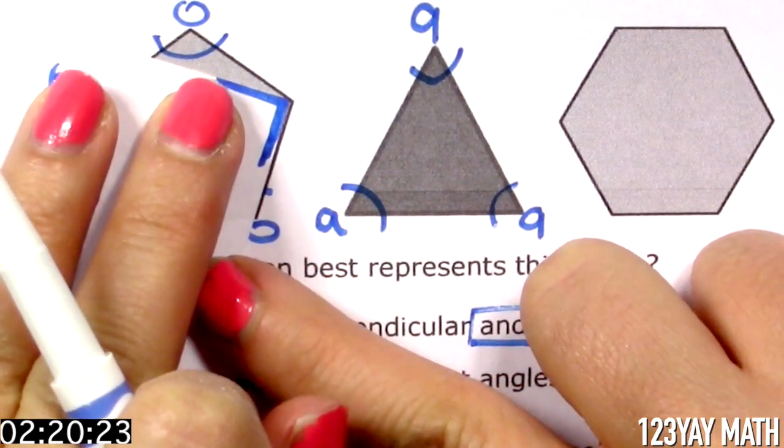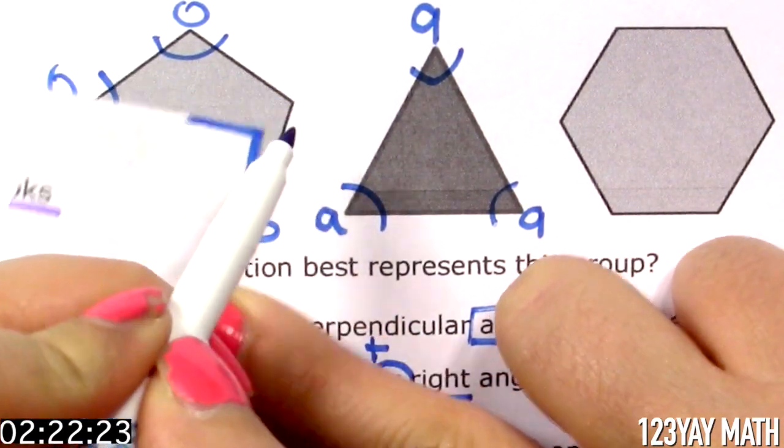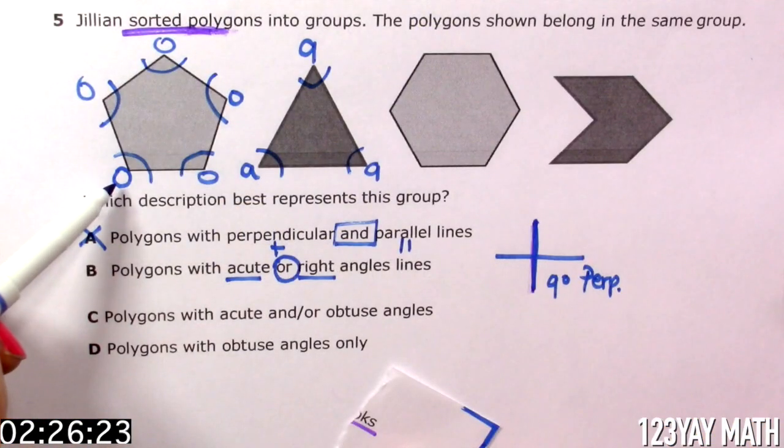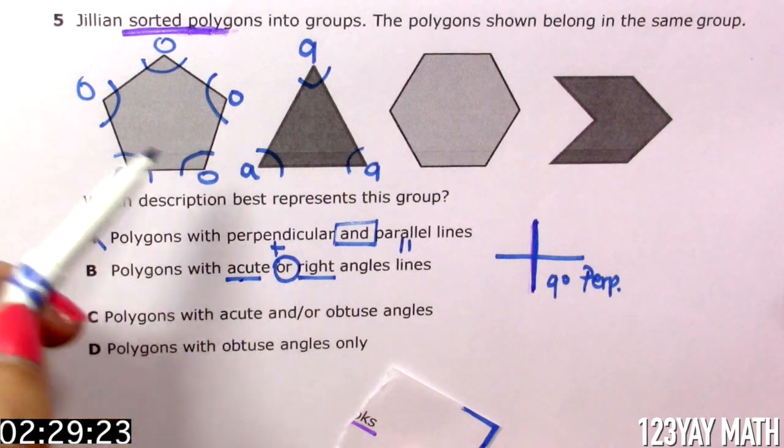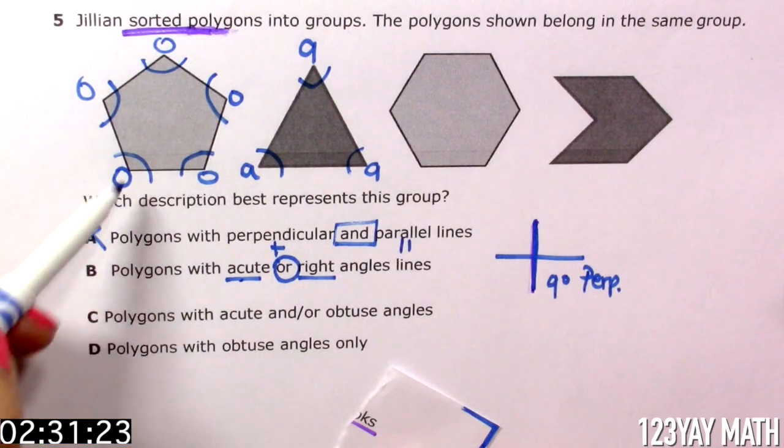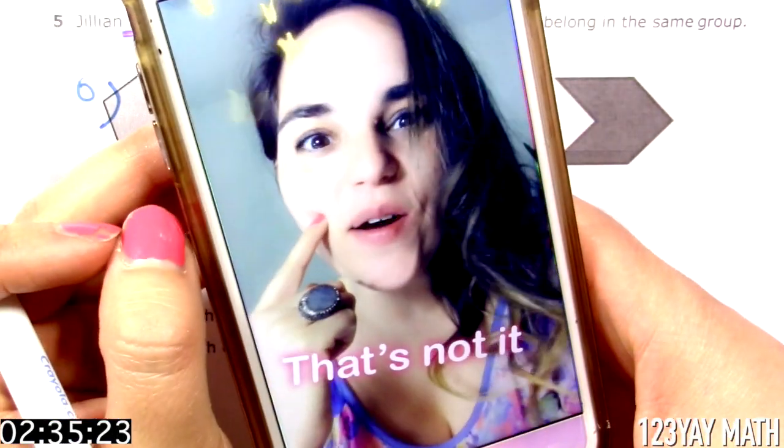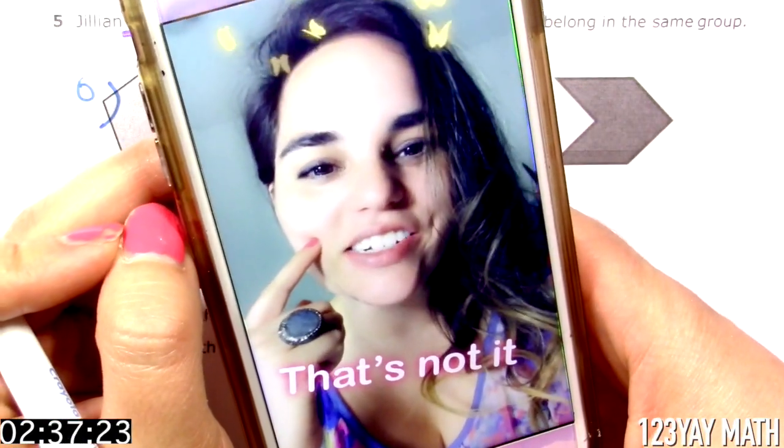Rotate the paper. Vertex with vertex. One line with one line. Definitely obtuse angles. So this shape does not have an acute nor a right angle. So does this mean this could be the answer? Do we choose that one? No. It's not the right answer.